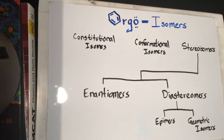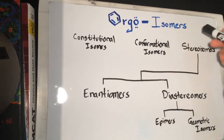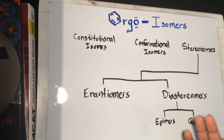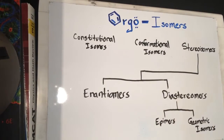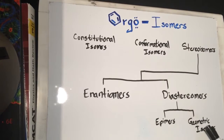To make this very simple, I made a little flowchart. I would highly recommend you jot this down before I continue, because that's going to help you picture everything. The overall term is isomers, which can be divided into three subcategories: constitutional isomers, conformational, or stereoisomers. Stereoisomers can be divided into enantiomers or diastereomers, and diastereomers can be divided further into epimers or geometric isomers.